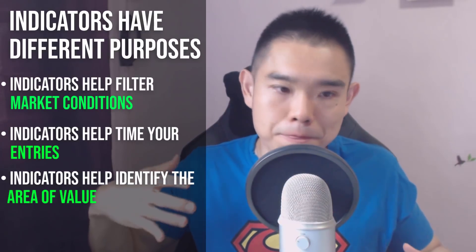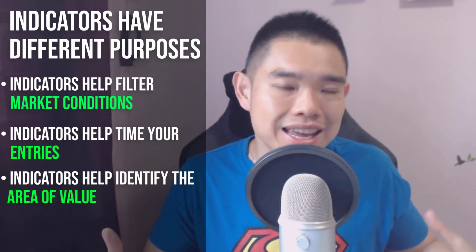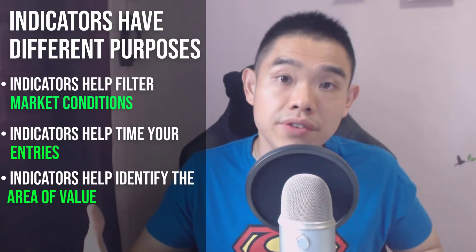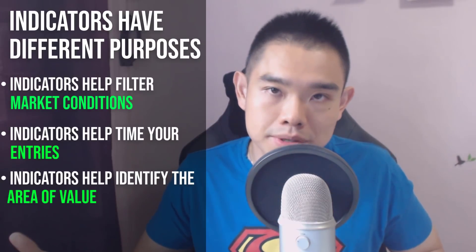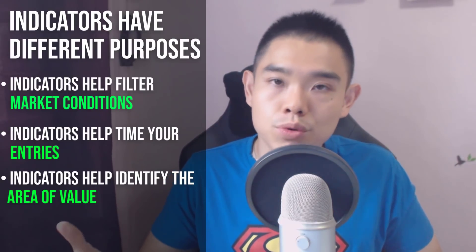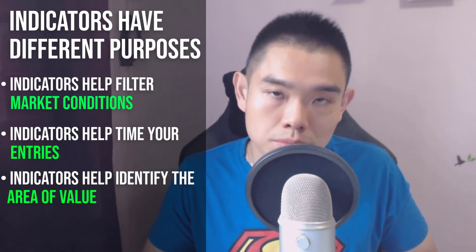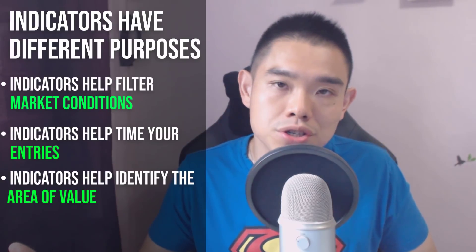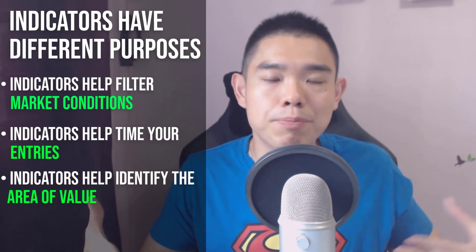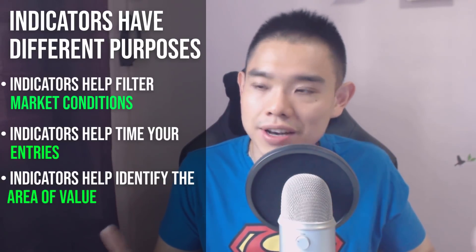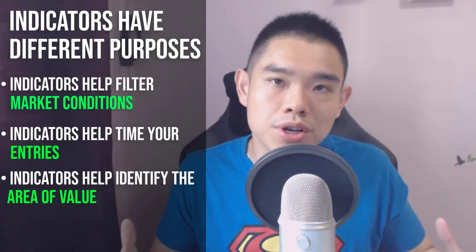Different indicators have different purposes, and some indicators even have multiple purposes. For example, moving averages can help you trail your stop loss, filter for market conditions, and also serve as an entry trigger, and much more.